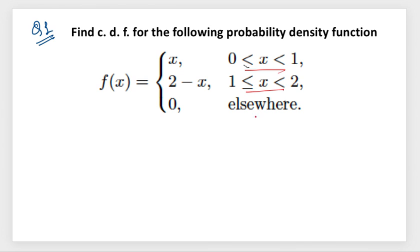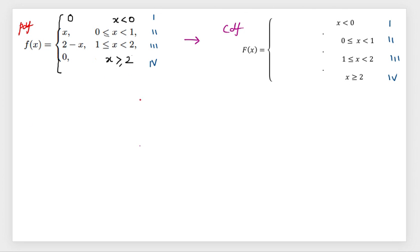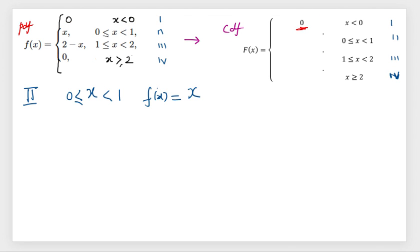Let us see with the help of a question. In this question we have two intervals and elsewhere it is zero. When we write down all the intervals nicely, we see: less than zero and greater than two we have zero value, and between zero to one and one to two there are two different functions. There are four CDF intervals. The first is obvious — less than zero there is no PDF, so the CDF is always zero.